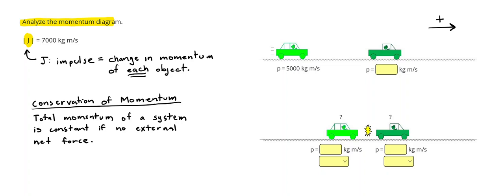Alright, and then we'll also need to define conservation of momentum. On this first problem we're going to use this to check our answers, but it basically says the total momentum of a system is constant if there's no external net force. And we'll show in just a little bit how we can use that to check our answer.